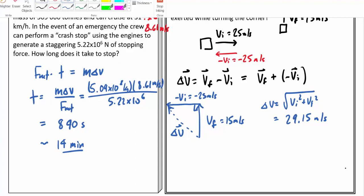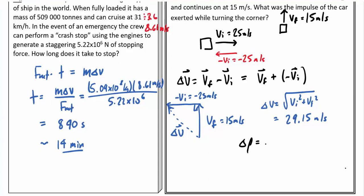The change in momentum, of course, is going to be m Δv. And so multiplying this by my mass of 1250 kilograms times 29.15 meters per second, I get a total momentum of right around 36,000 kilogram meters per second.